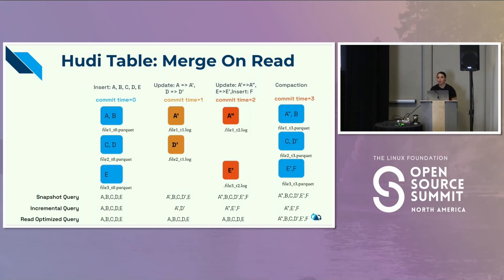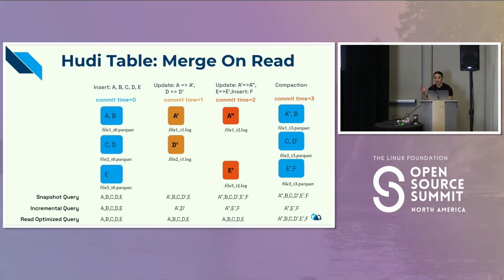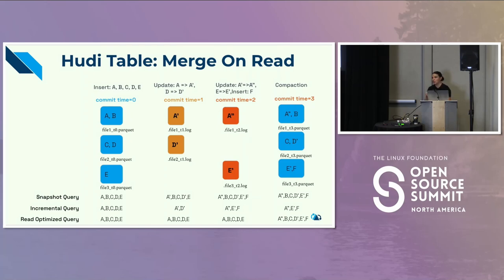Earlier I mentioned that a copy on write table has less operational complexity than a merge on read table. With a merge on read table, there is a compaction service that Hoodie offers that combines all the log files at a configuration you specify — like how often do you want to do compaction, how do you want to merge these files. It gets all the log files and merges them into a new version of the Parquet file. All the log files get merged and you have whole Parquet files. Then as more commits happen, they get written to log files, and compaction at some time combines those into a new Parquet file.